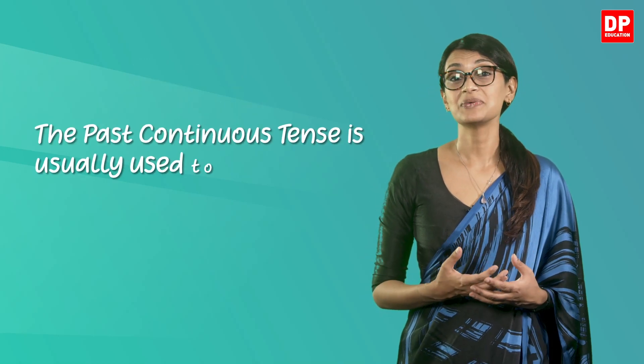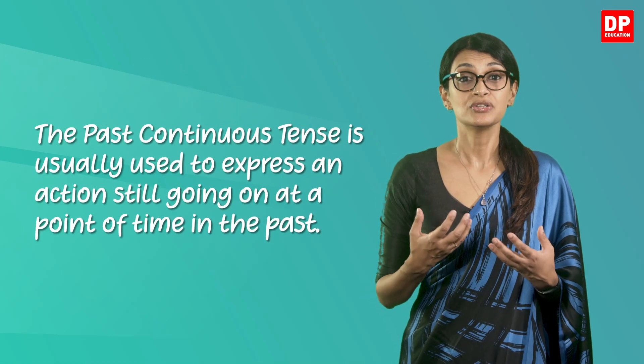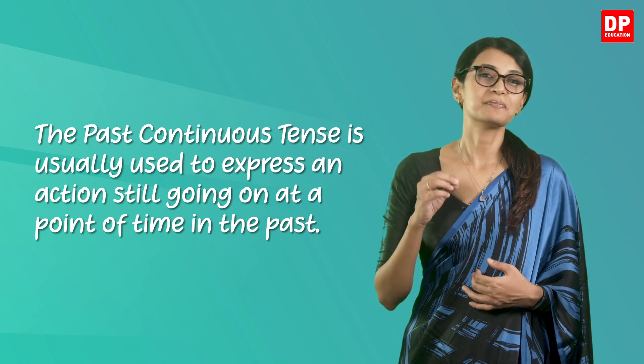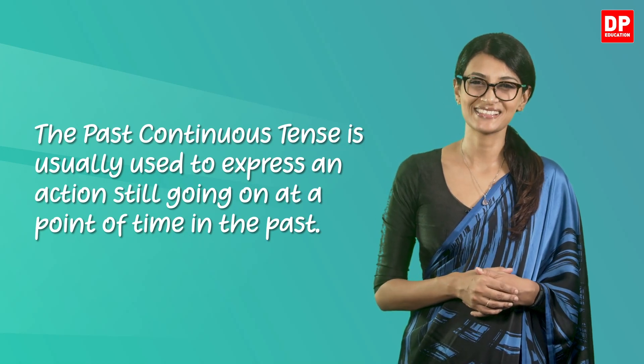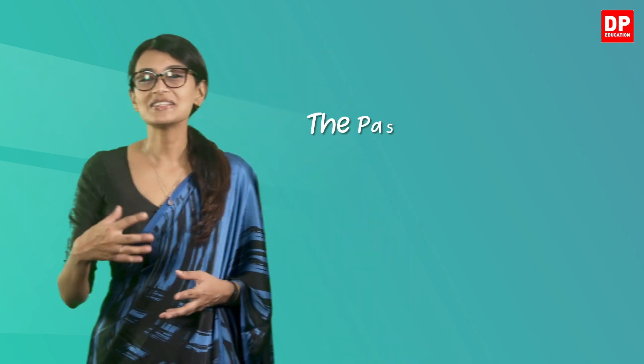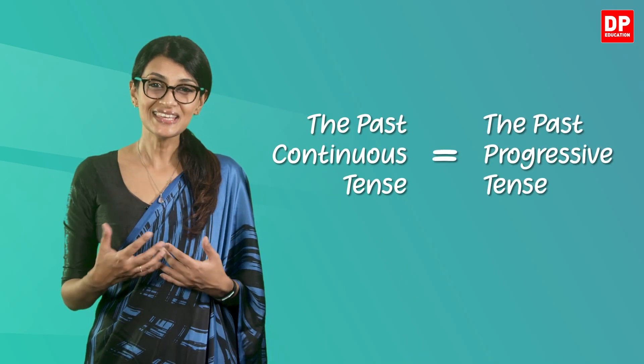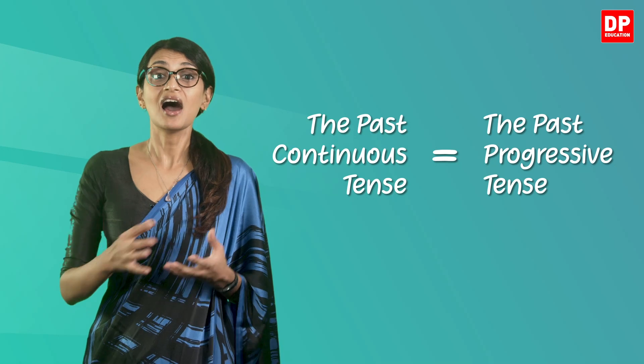It says the past continuous tense is usually used to express an action still going on at a point of time in the past. What does that mean? It refers to the continuing action or state that was happening at some point in the past. It is also known as the past progressive tense.